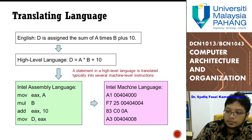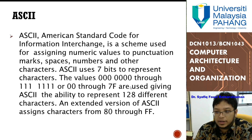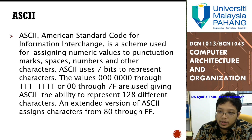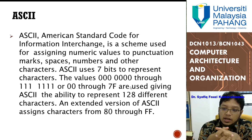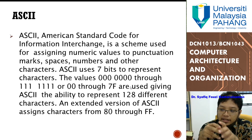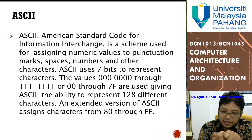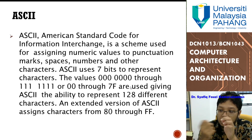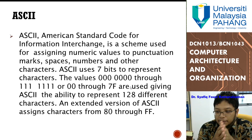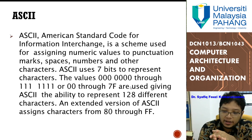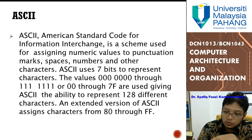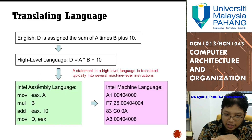Assembly language is used based on ASCII. ASCII is a scheme used for assigning numeric values to punctuation marks, spaces, numbers, and other characters. ASCII uses 7 bits to represent characters, with values from 0000000 to 1111111, or 0x00 to 0x7F, giving ASCII the ability to represent 128 different characters. An extended version of ASCII assigns characters from 0x80 through 0xFF. ASCII is what we use to represent the assembly language when you convert it into a machine language.